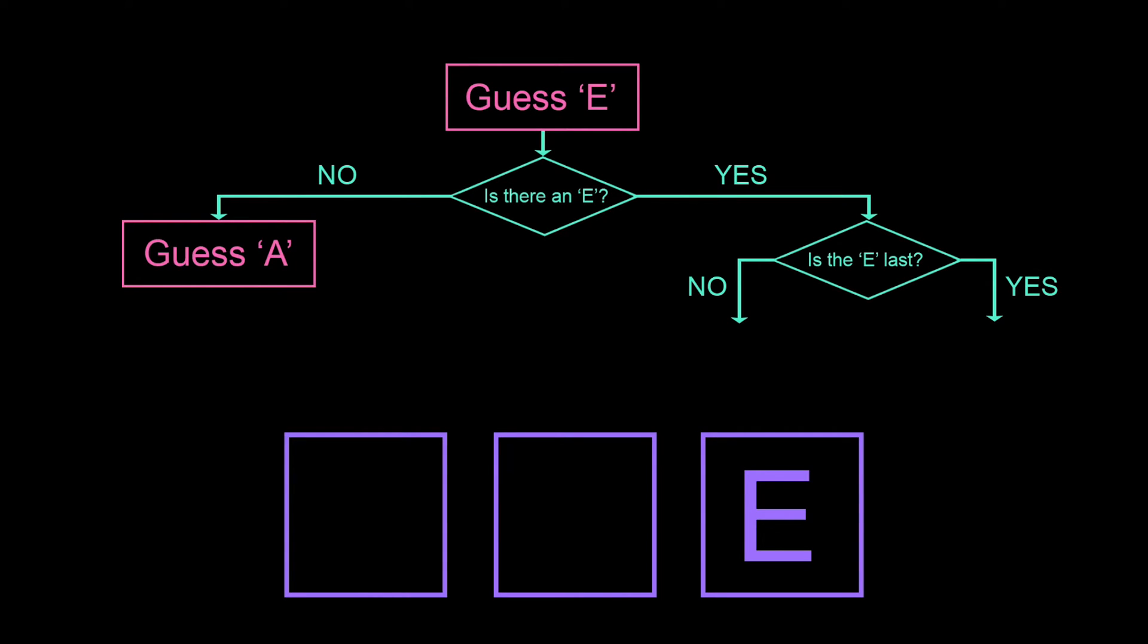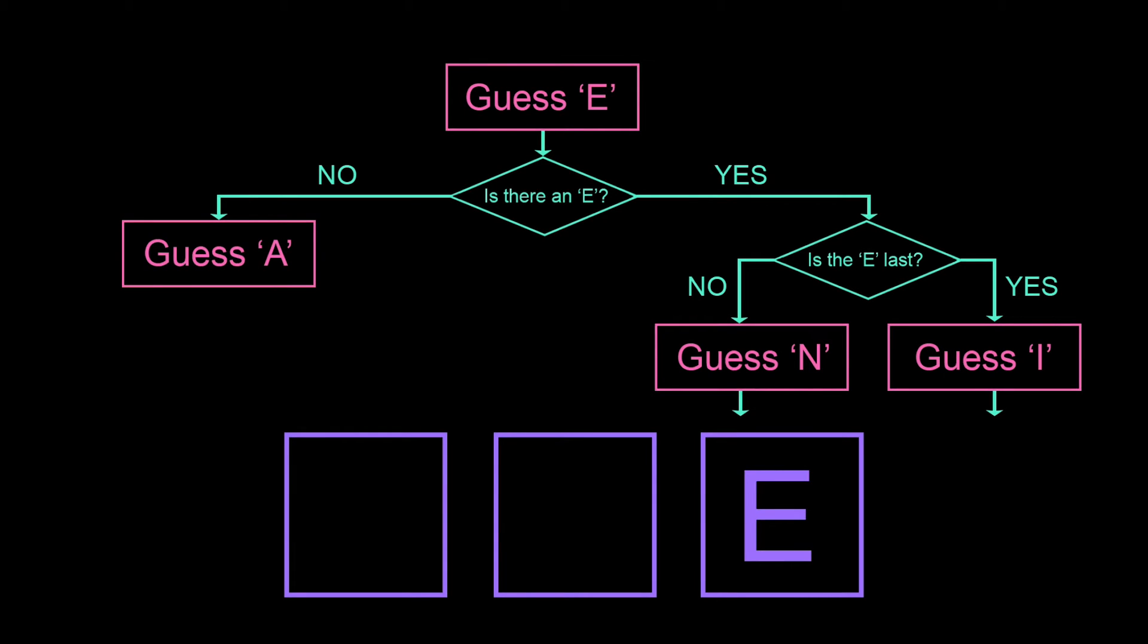If the answer to our question, is E the last letter of the word, is yes, then we're likely to have an OE or an IE ending since those are pretty common, so our next step in this process on this branch will be to guess I. We can continue on in this way until we have a complete process. It's a lot more complex than our first two processes, but we can easily see how this process is more likely to get the correct word in fewer guesses.